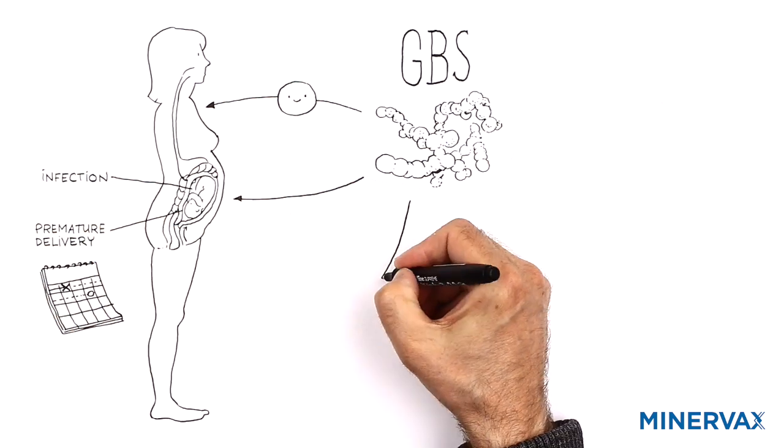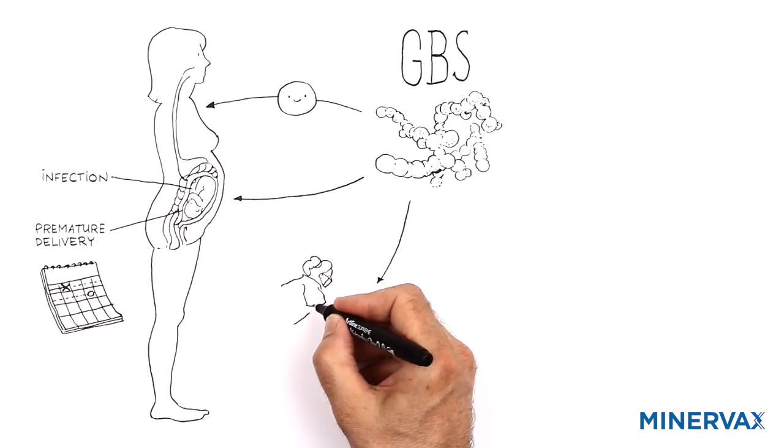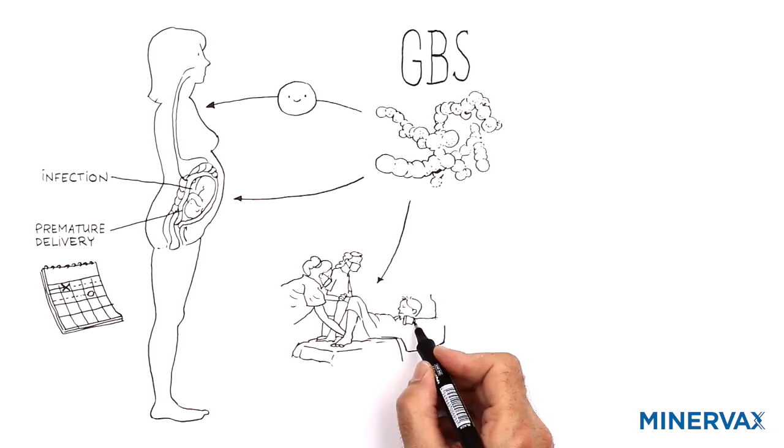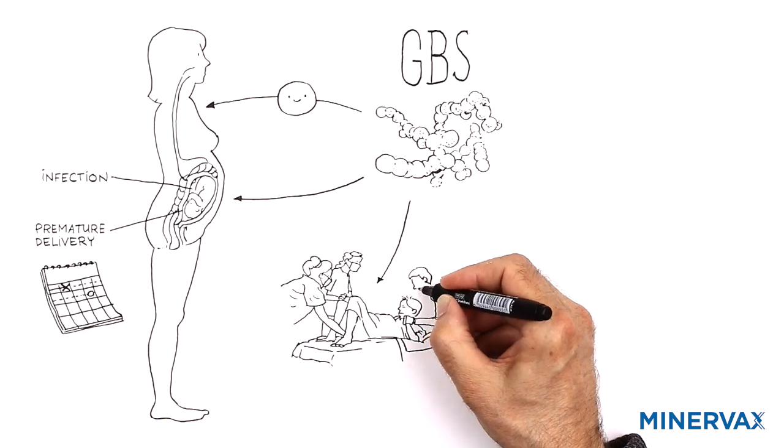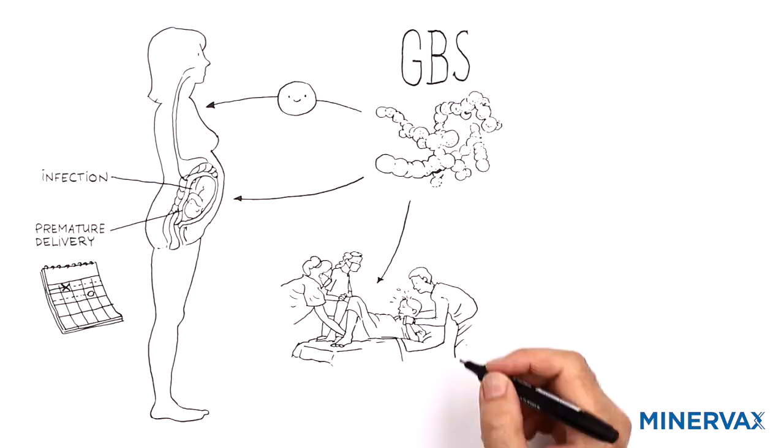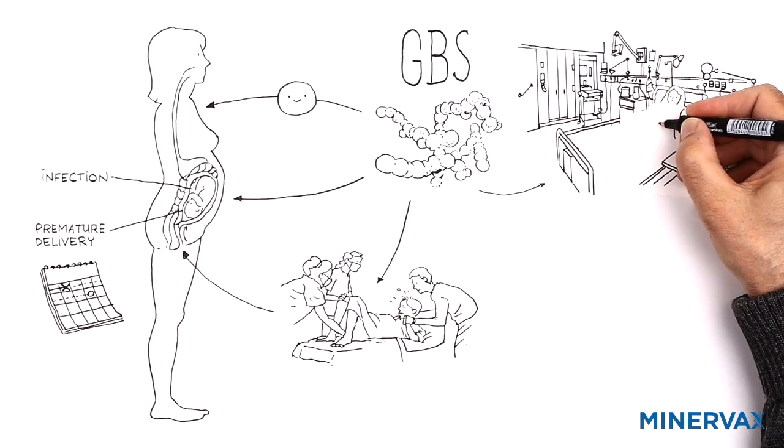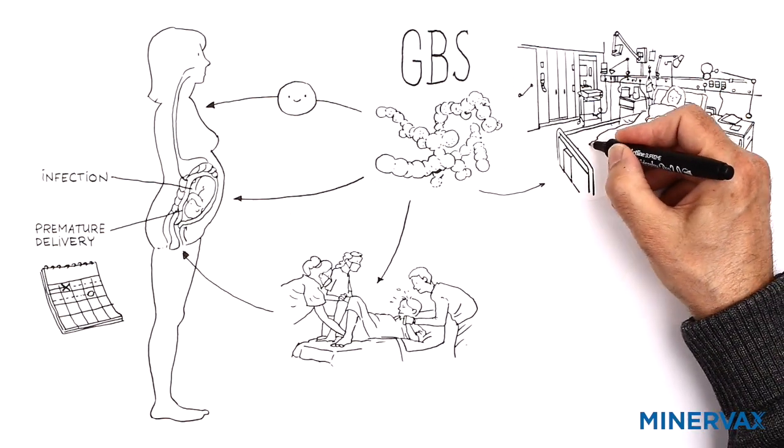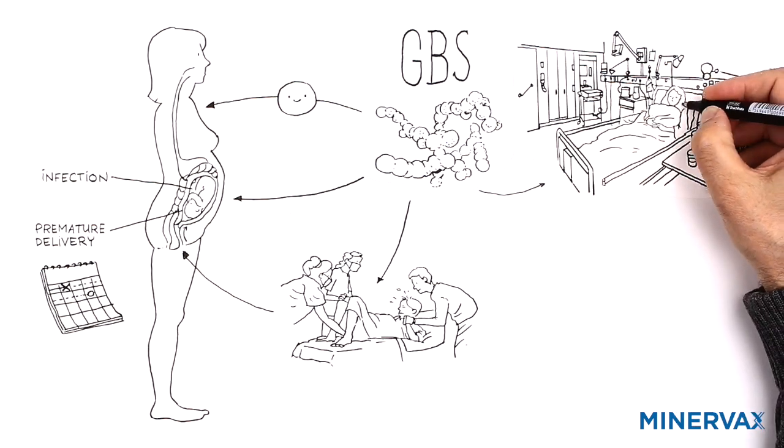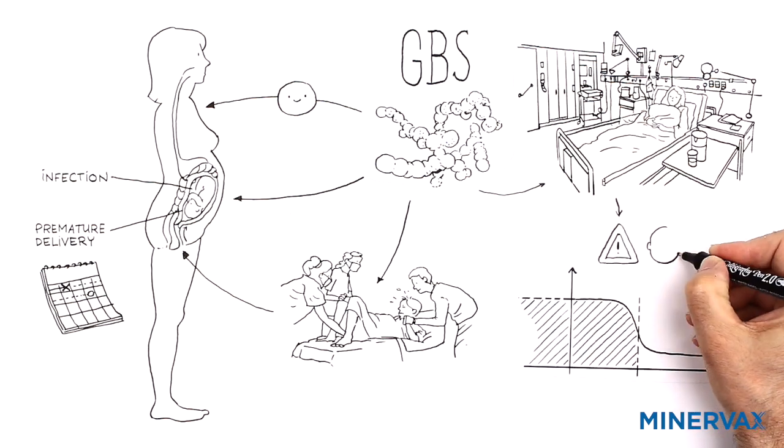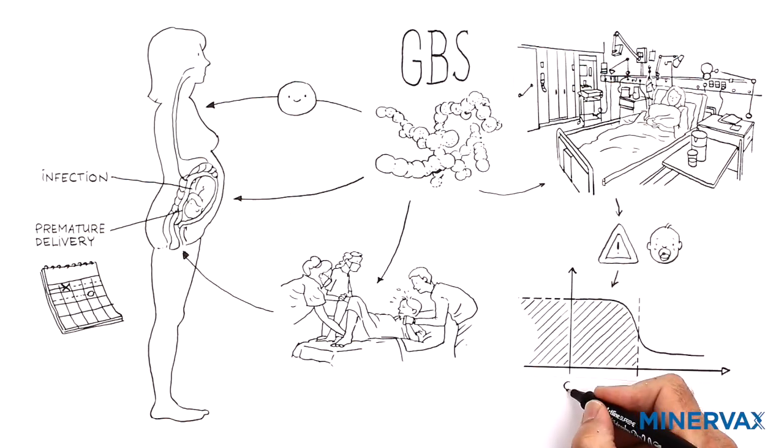premature delivery or infect the fetus, leading to birth of an infected baby, or the baby may become infected with GBS during childbirth from bacteria in the vagina. The baby can also come in contact with the bacteria from the mother or a hospital environment after birth, and babies are especially prone to GBS infections for the first three months of life where their immune system is immature.